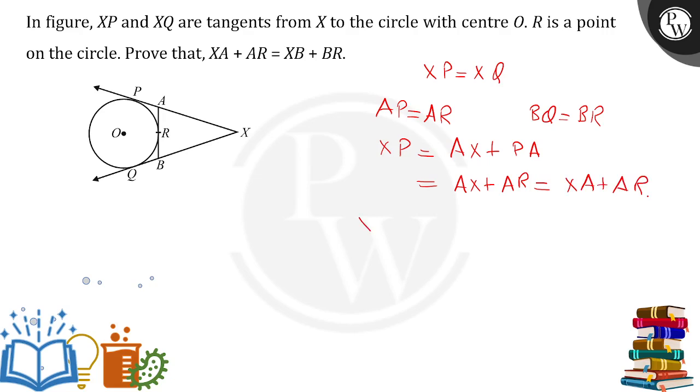For the length XQ, same thing happens for the length of XQ. It is XB plus BQ and BQ is equal to what? BQ is equal to BR, right? Now since we have mentioned XP is equal to XQ, so that means XA plus AR is equal to XB plus BR and that is done. That is how the problem has to be done.